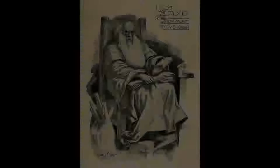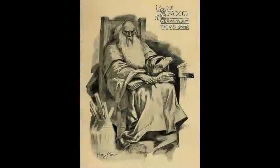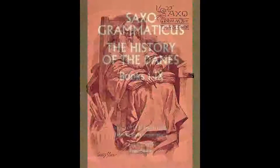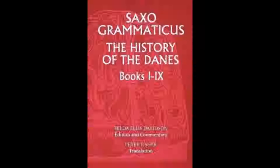Hamlet was actually based off of the Norse legend created around 1200, written by a man named Saxo Grammaticus. His books — 16 of them in total — were collectively known as The History of the Danes and tell the tales of the rise and fall of Denmark's mighty kings.